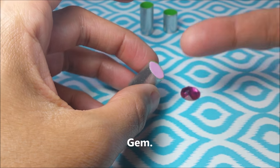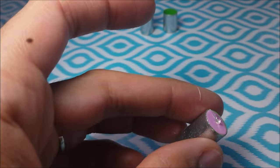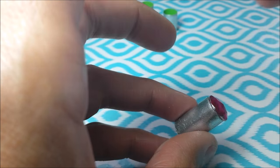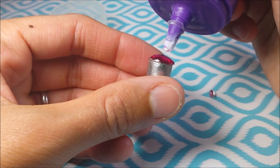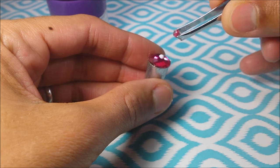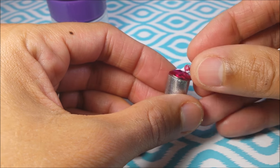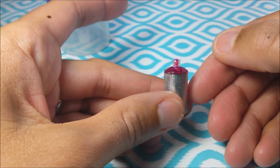Then glue a sequin to your craft foam paper. Then glue a tiny little bead on top.